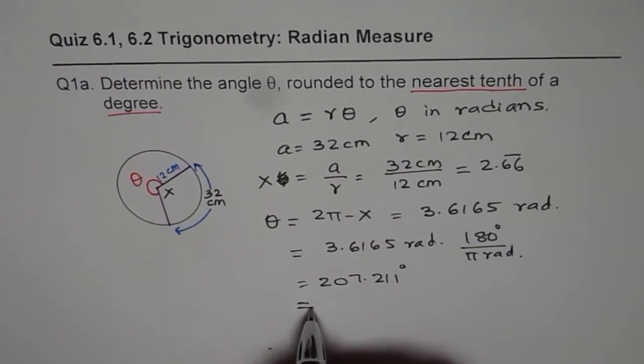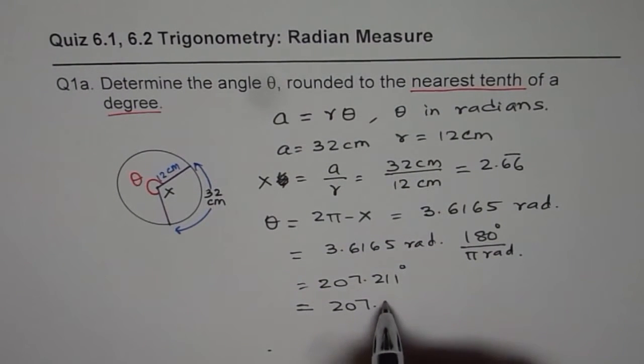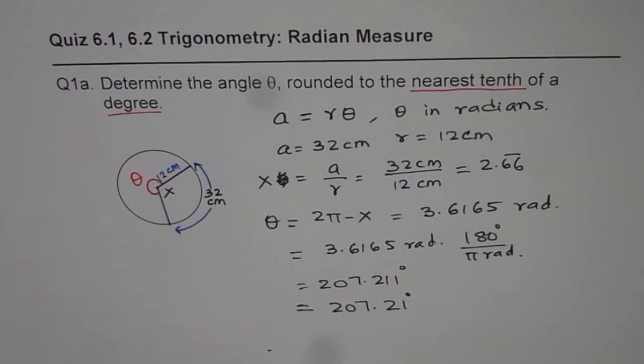which when rounded to the tenth place, you will get as 207.21 degrees. So these are the steps to be followed.